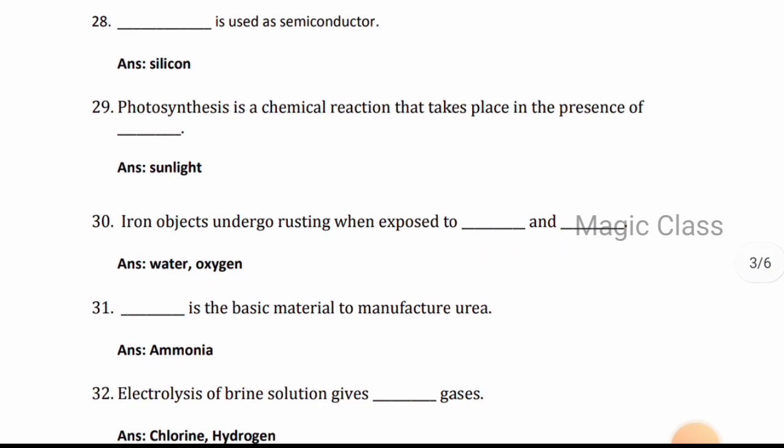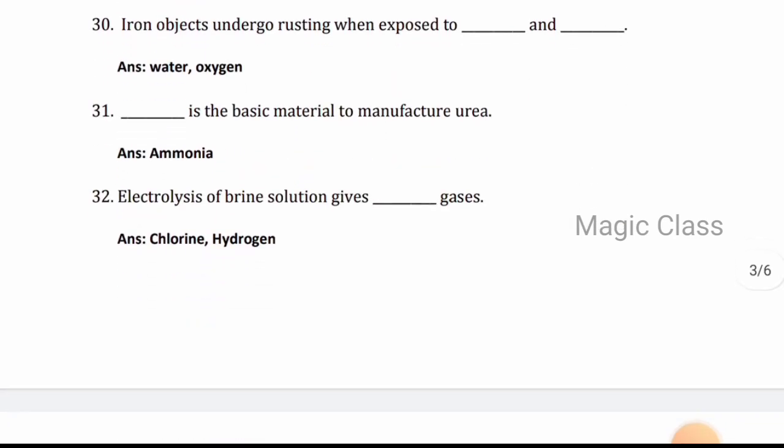Question 29: Photosynthesis is a chemical reaction that takes place in the presence of sunlight. Question 30: Iron objects undergo rusting when exposed to water and oxygen. Question 31: Ammonia is the basic material to manufacture urea.